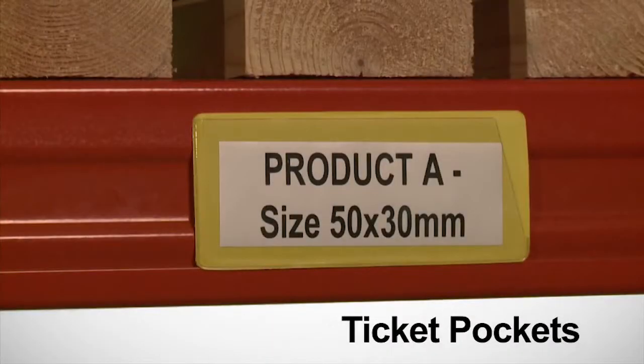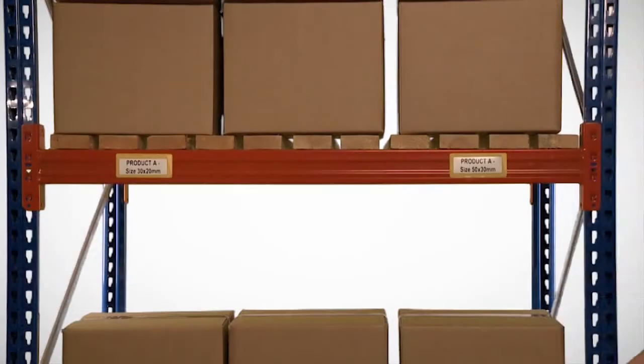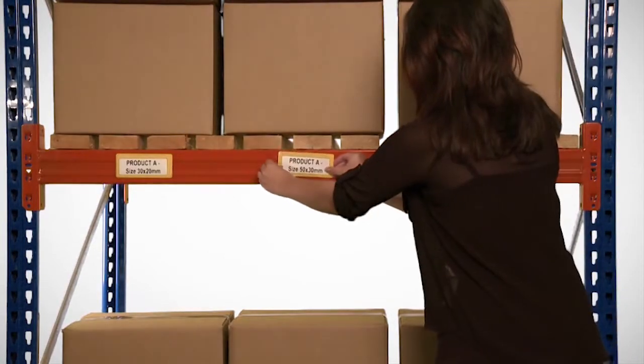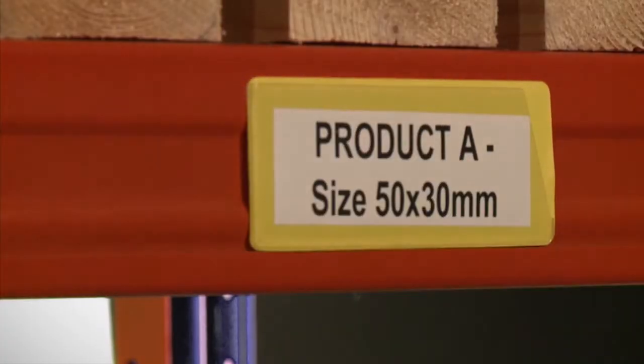A range of flexible yellow PVC ticket pockets for rack and beam identification, which have a clear PVC front that opens on the top and side, allowing a card or ticket to be quickly inserted or removed.